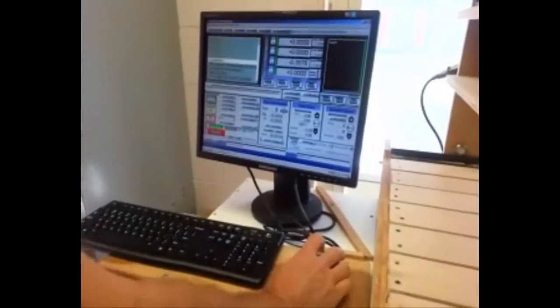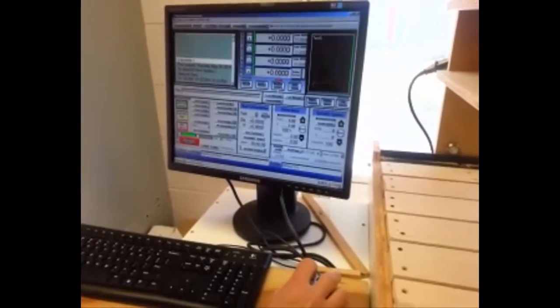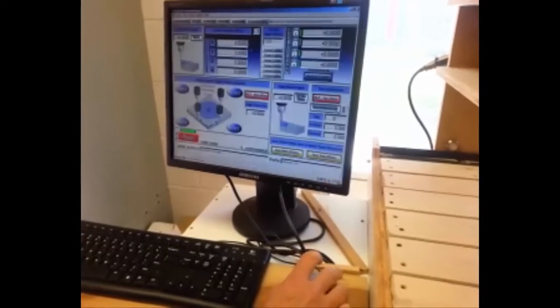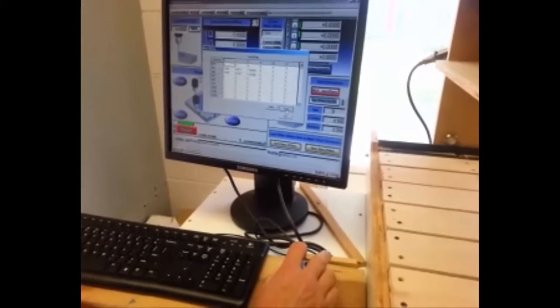We'll go ahead and go to machine coordinates, ref all home zero, go back out of machine coordinates, go back to offsets, come down here, save offsets, select G54, and save G54.